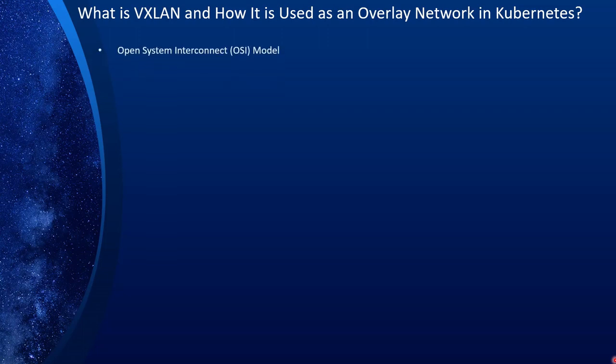For that, I'm going to talk first about OSI, which stands for Open System Interconnect Model, because you need to understand various layers in networking to understand and distinguish between various overlay networks — such as IP-in-IP, for instance, that operates in Layer 3 — and VXLAN that operates in Layer 2. So what are Layer 2 and Layer 3 networking? I've covered those in previous episodes, but in case you missed those, I just want to make sure you have some basic understanding of what the OSI model is.